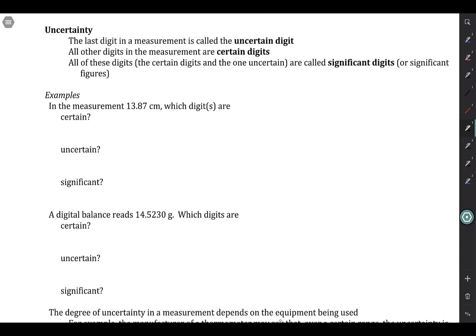Let's look at a couple examples here. Let's say we have a measurement that's written down that we're trying to interpret, and the measurement says it's 13.87 centimeters. Which digits are certain, which are uncertain, and which are significant? Well, the certain digits are all of the digits except for the last one, so the 13.8. That 7 at the end is the uncertain digit. And then taken all together, all of those digits, the 1, the 3, the 8, and the 7, are considered significant.